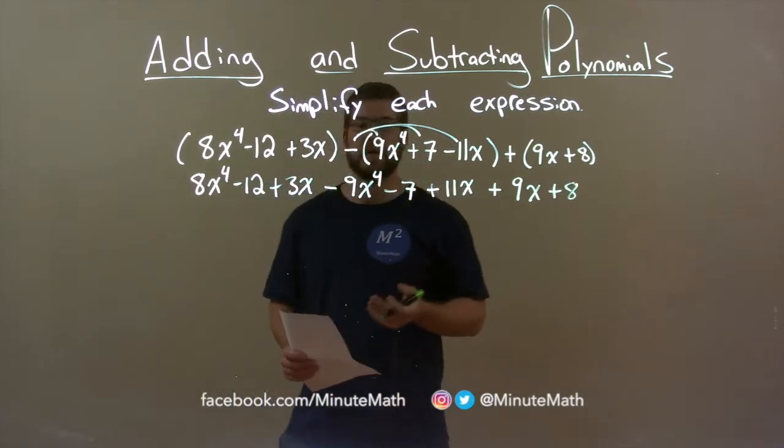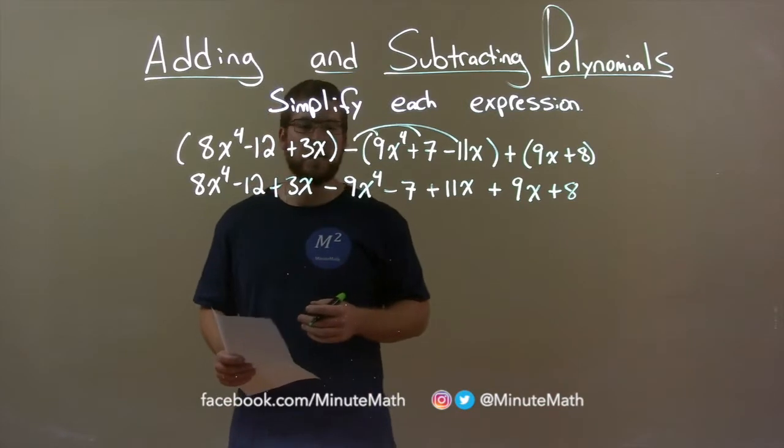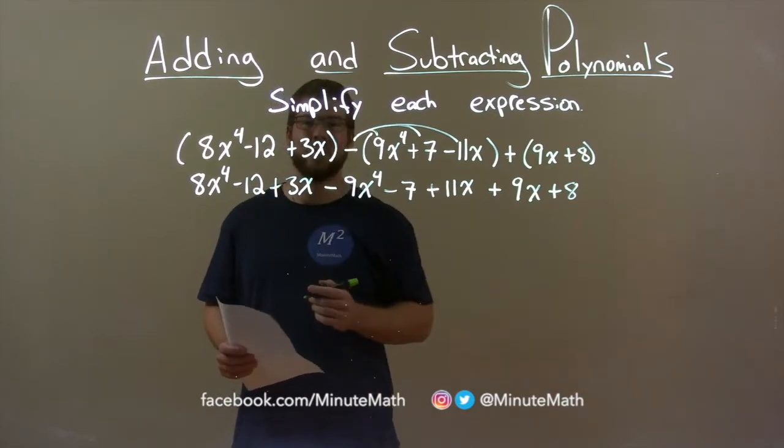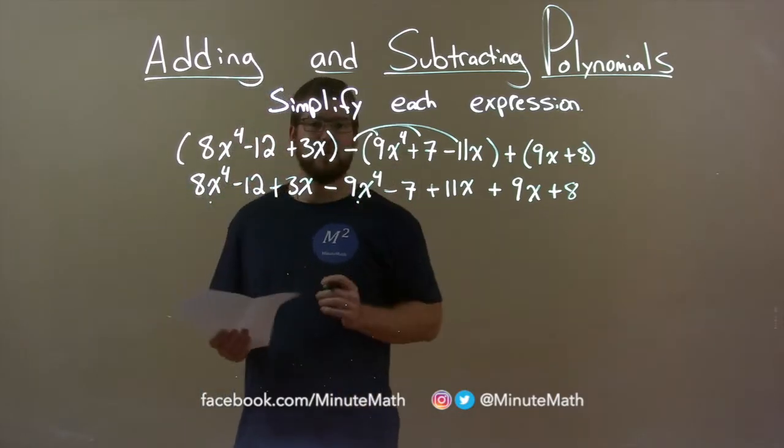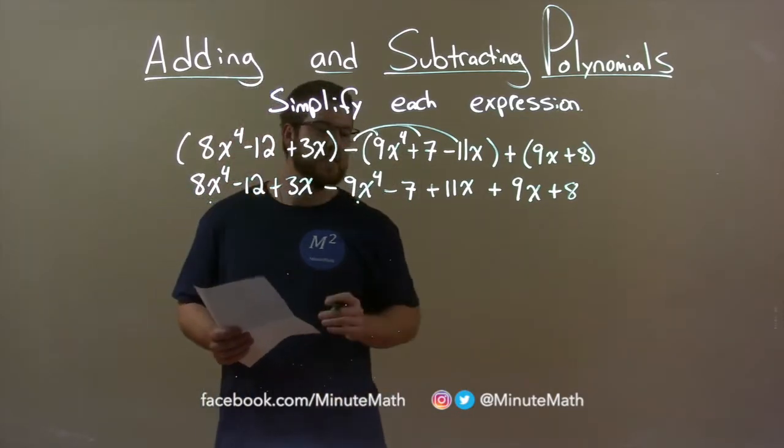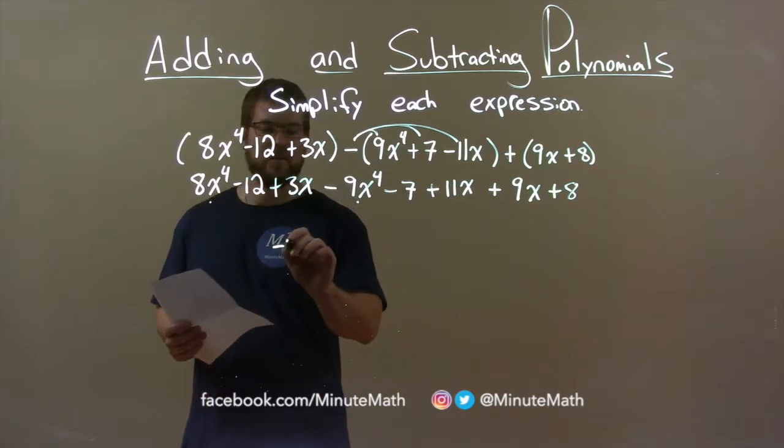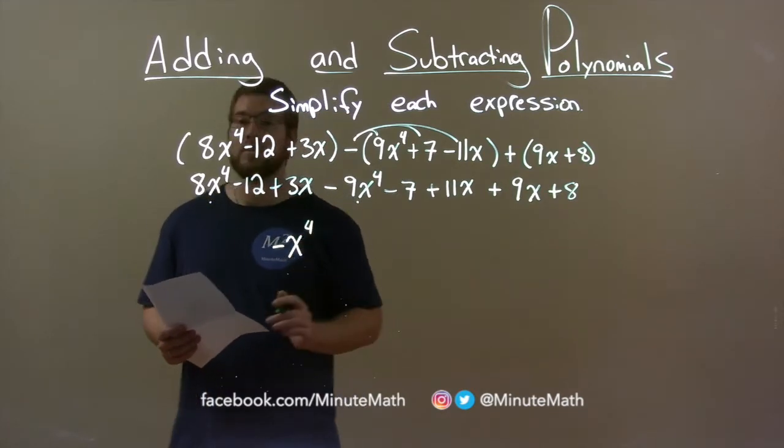Now I want to combine my like terms. Start with my highest degree. Highest degree I see is to the 4th power. Got a dot there, dot there. I use a dot to show that I've used that term. 8x to the 4th minus 9x to the 4th is minus 1x to the 4th.